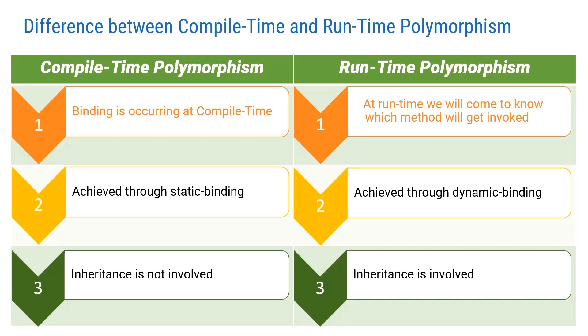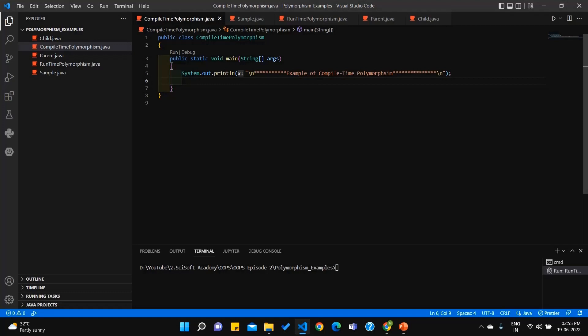We will explain this with live coding. We will explain the theory obviously, but we will also see live coding. So let's experiment with some basic examples of compile-time polymorphism and runtime polymorphism. We will create two classes.